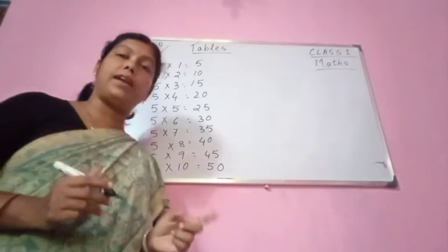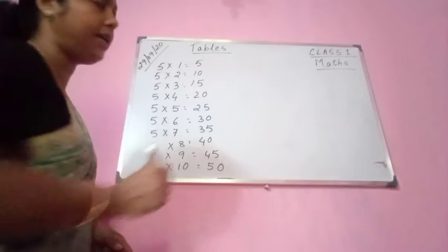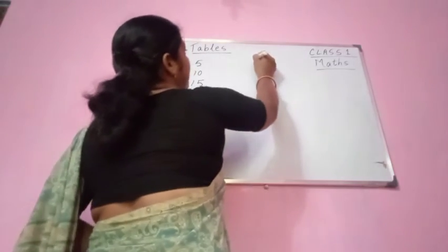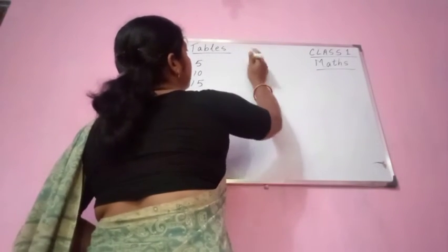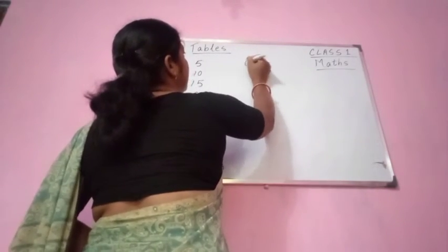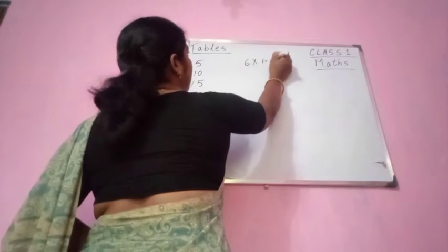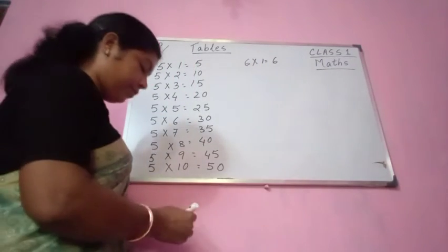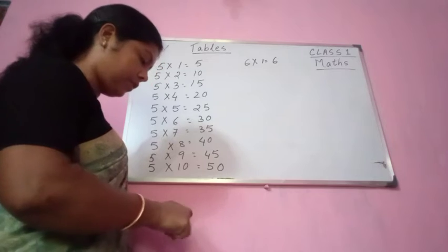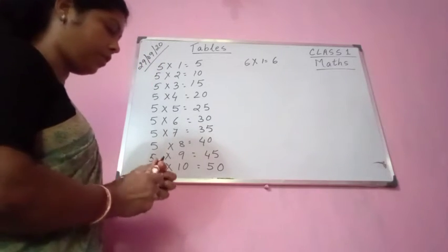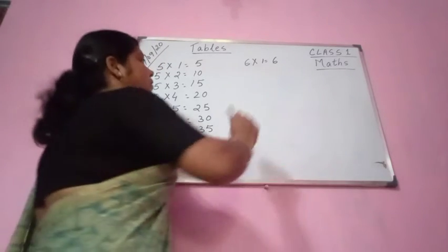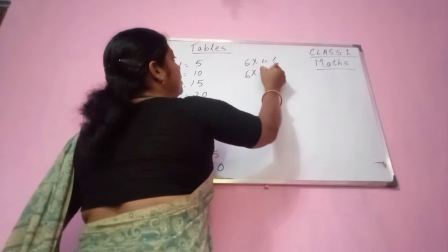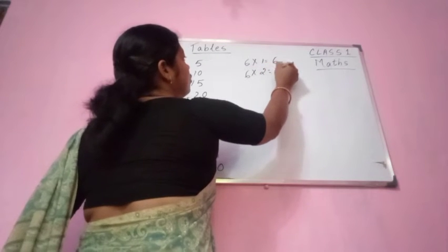Now we will write the table of 6. See here. 6 into 1 equals 6 — 6 ones are 6. 6 twos are 12.